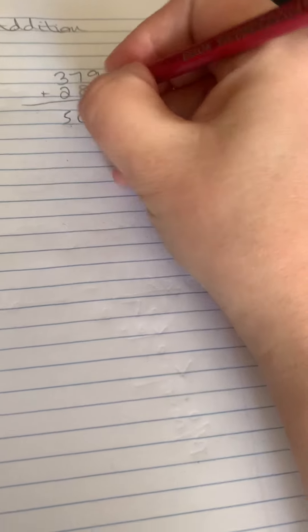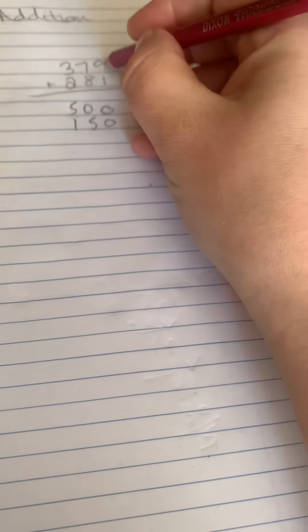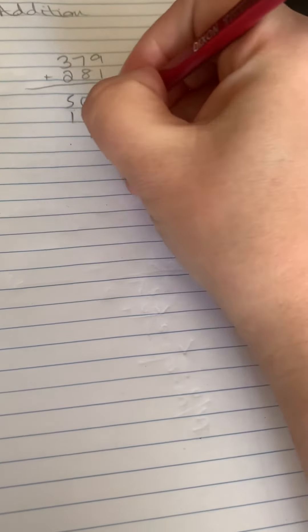The 70 and the 80 together would make 150, and the 9 and the 1 together would make a 10, and then I can just add those pieces up.